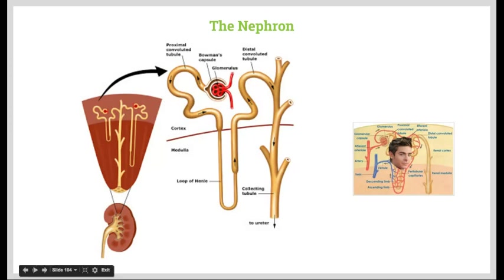From the Bowman's capsule, the nephron loops down and back into the medulla. It leaves the capsule into the proximal convoluted tubule, which is still in the cortex. Then we go down into the descending loop of Henle, back up into the ascending loop of Henle located in the medulla, back up into the cortex through the distal convoluted tubule, and then into the collecting duct, which carries the urine and nitrogenous waste down to the ureter, which then carries the urine to the bladder.